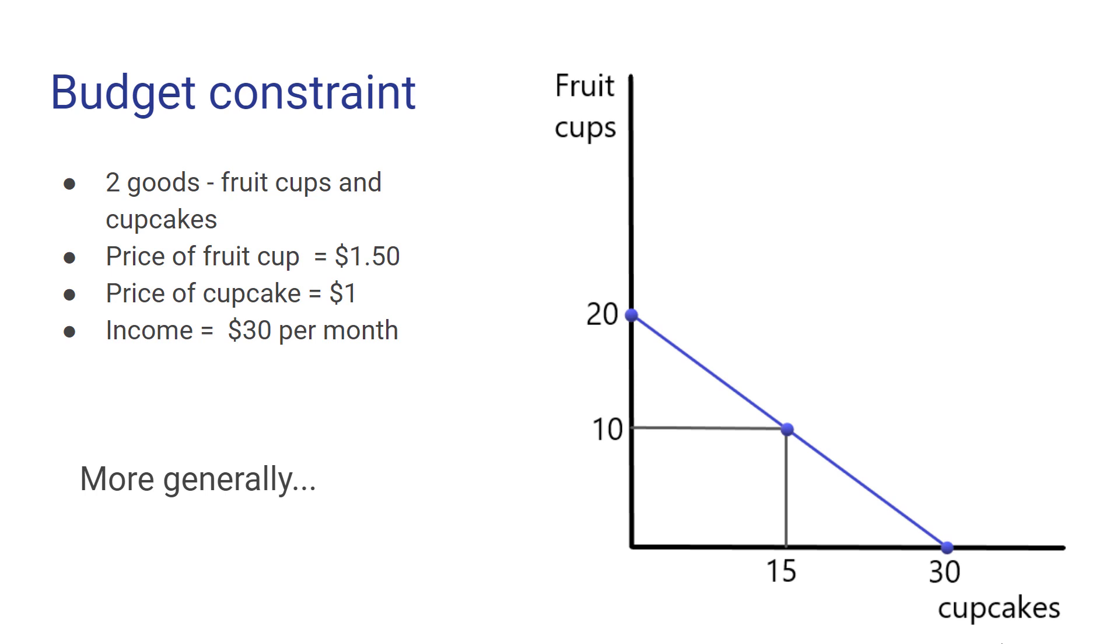One question you might ask is, how you might buy a fraction of a cupcake to get all those points connected? Well, just remember this is in a typical month. You can adjust the timing of these things so that you can get fractional components as well. For example, you might not be able to buy two-thirds of a fruit cup in a given day, but you could choose to buy two fruit cups and spread the consumption of that over three days so that each day you're consuming two-thirds of a fruit cup.